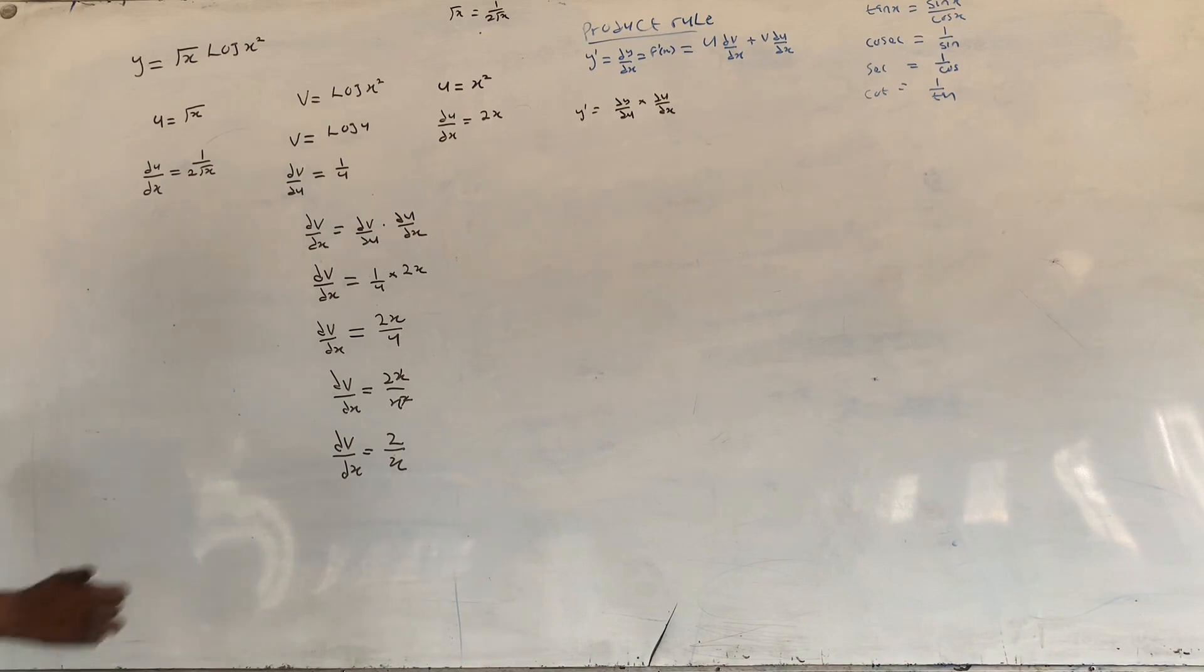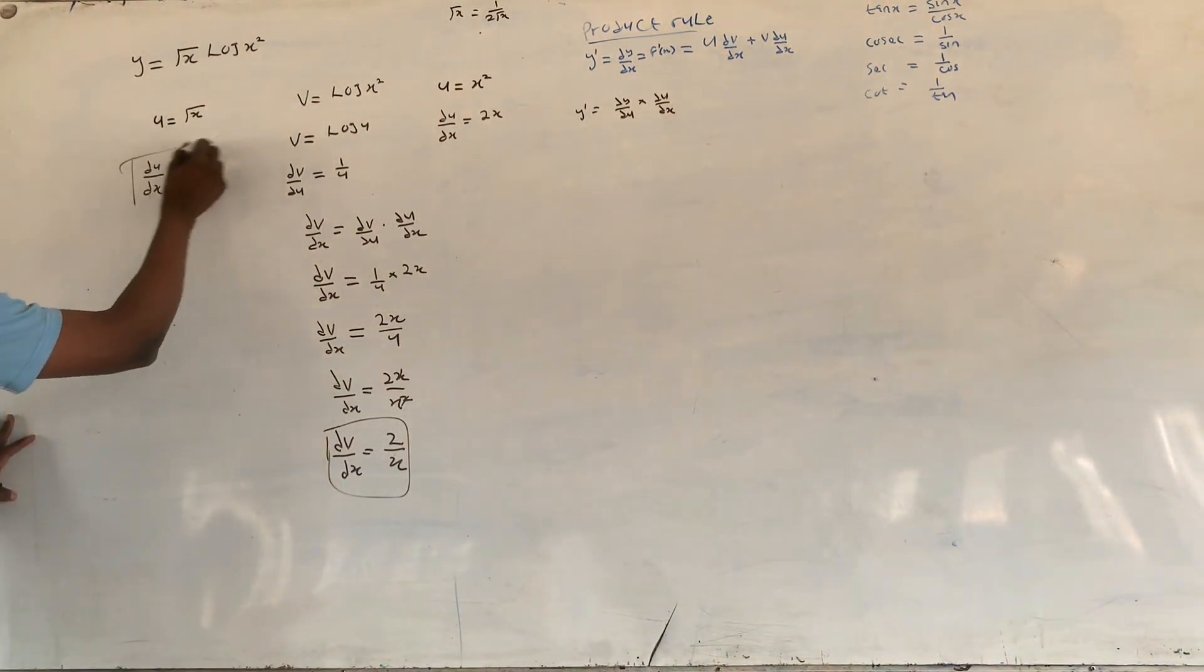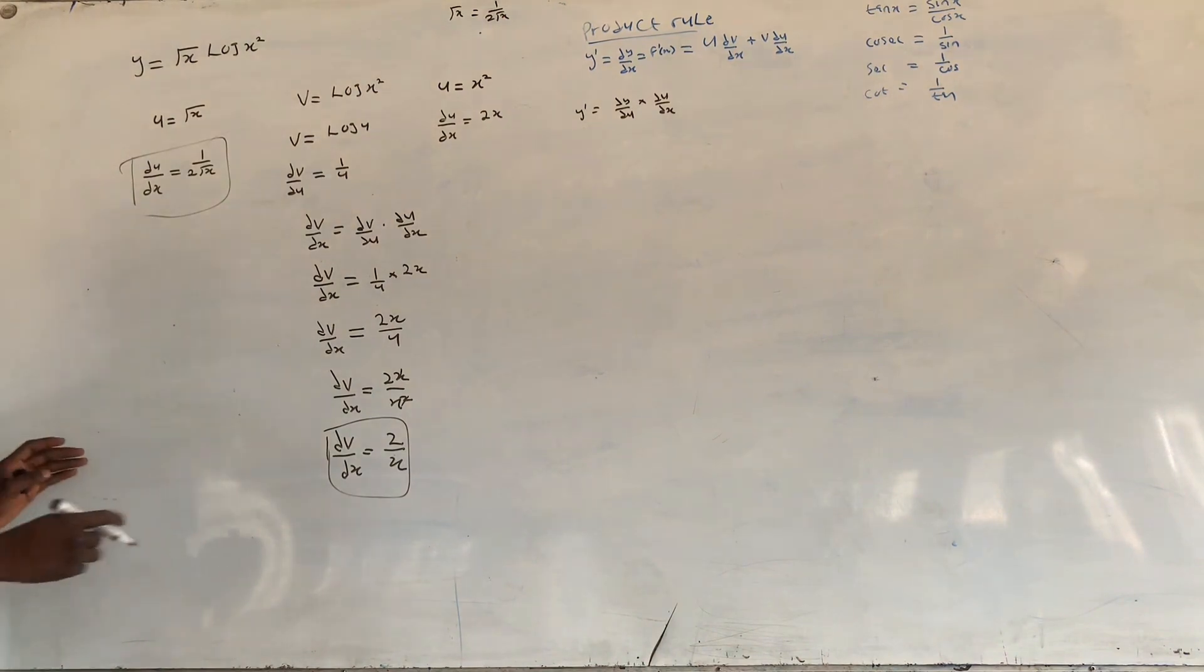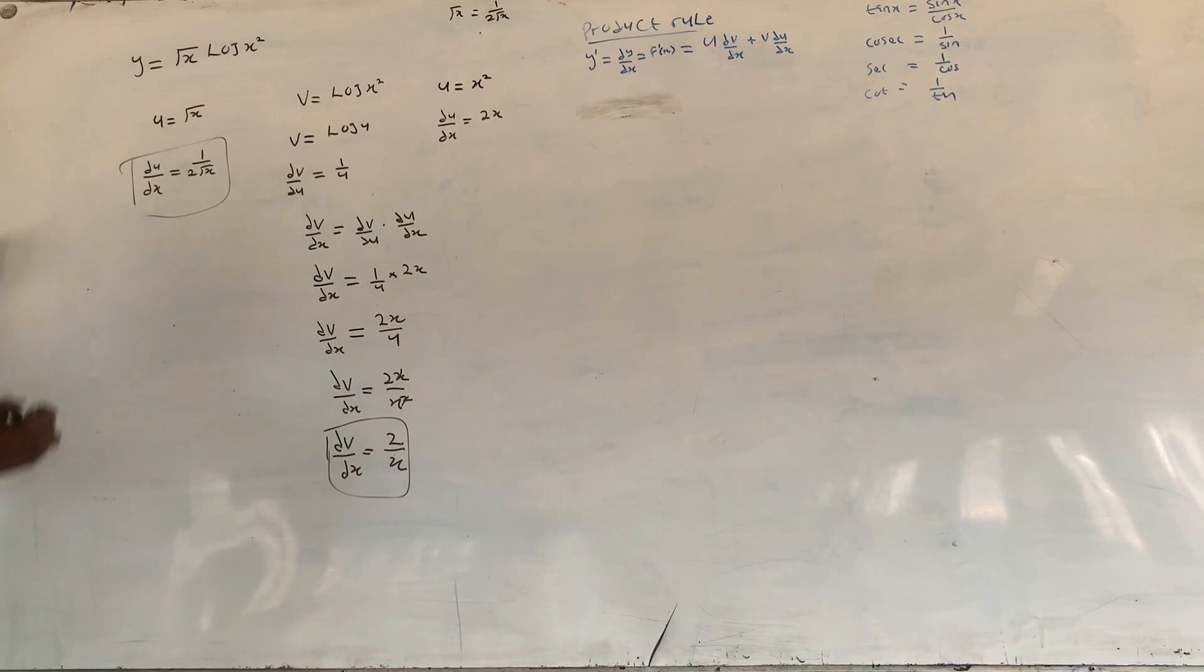So now we have dv over dx, then we solve it using what? Our product rule. So now remember we said dv over dx is equals to here.